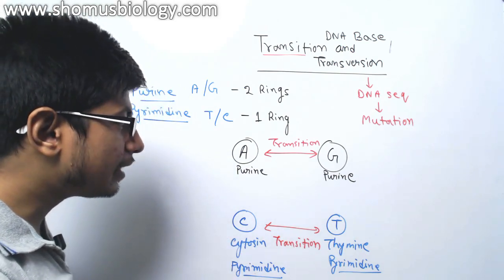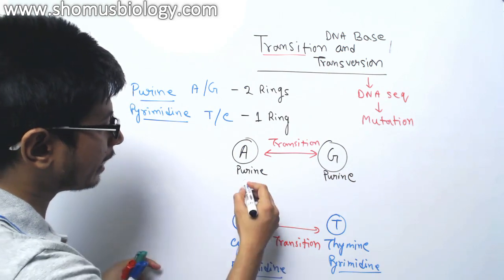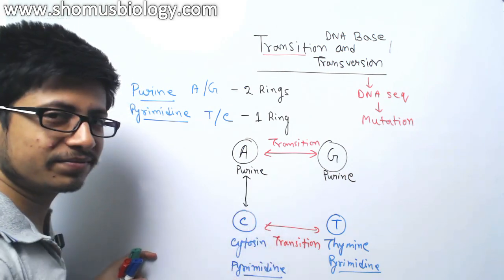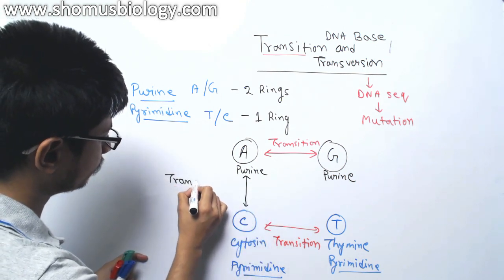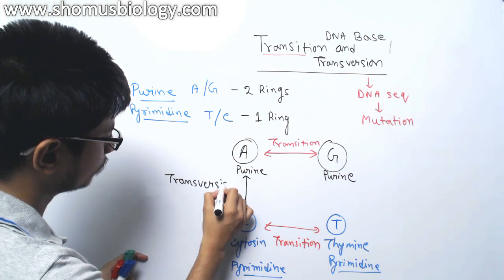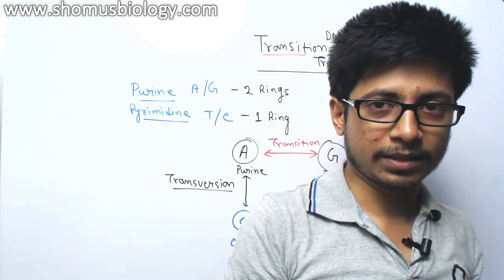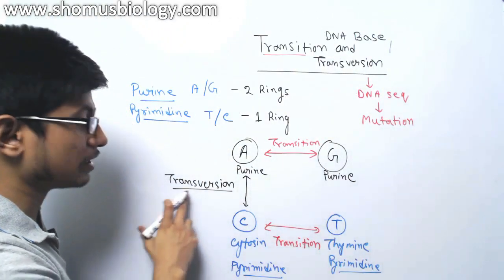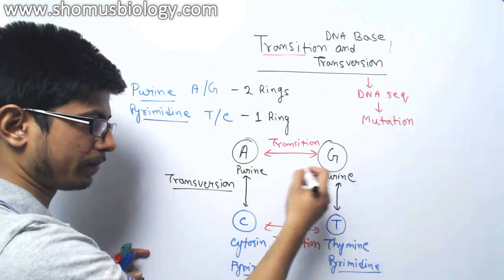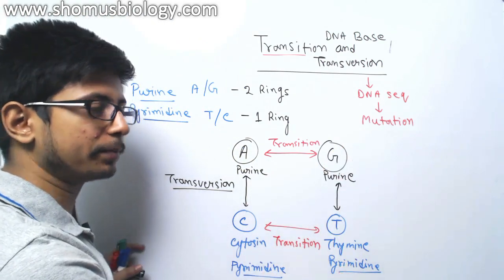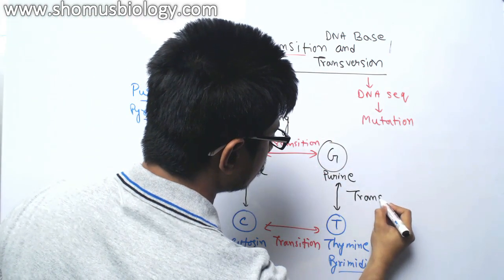While there are other factors like purine can be substituted with a pyrimidine. That will be known as transversion, which is one type of base substituted by another type. This is known as transversion. Similarly, here G is substituted with T or T is substituted with G. Both these cases, purine is substituted by pyrimidine or pyrimidine substituted by purine, known as transversion.